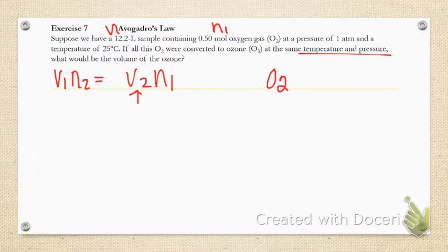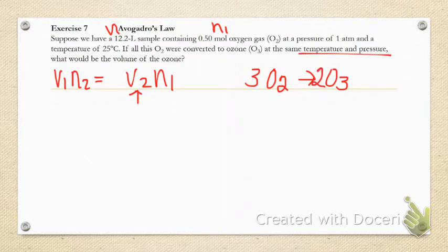So there is our reaction, we just need to balance that. We're going to put a 3 here and a 2 there. Now we have N1 is 0.5 moles of oxygen.